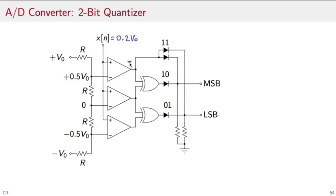This comparator will compare 0.2 volts to 0 volts, and so this comparator will output a positive voltage. Similarly, this one will compare 0.2 to minus 0.5, so again the output will be positive.